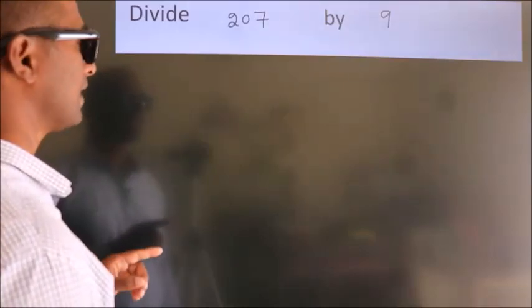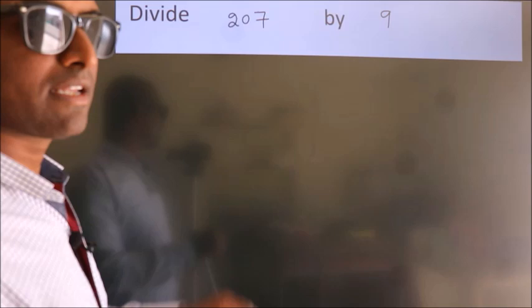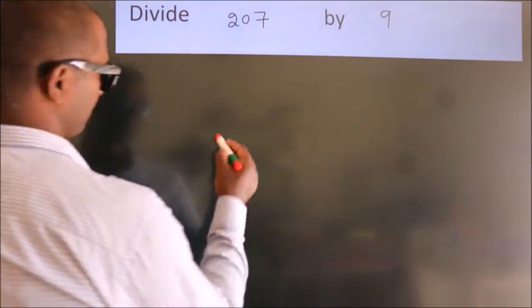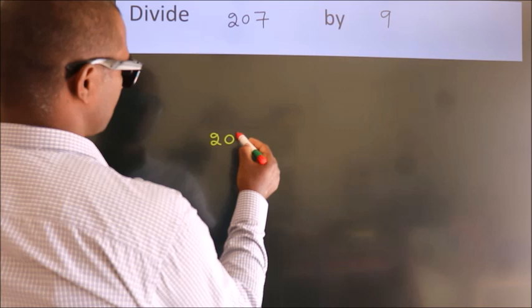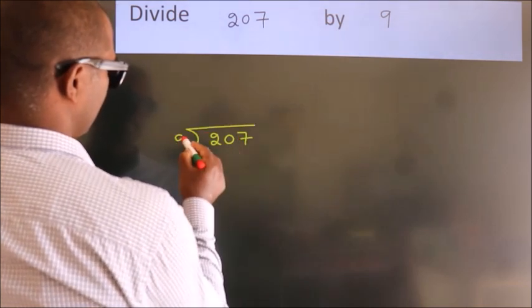Divide 207 by 9. To do this division, we should frame it in this way. 207 here, 9 here.